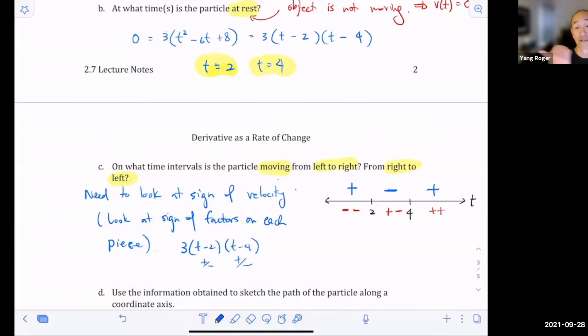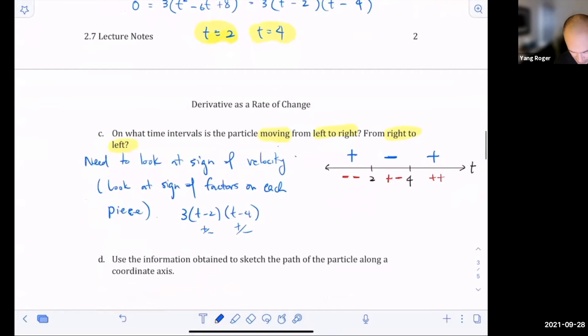So the positive direction is left to right. The negative direction is from right to left. So it's left to right from zero to two union four to infinity. And it's right to left when we have the negative, the velocity is negative. So that's going to be from two to four. Is there any questions about this?